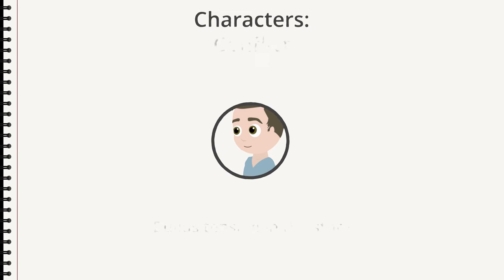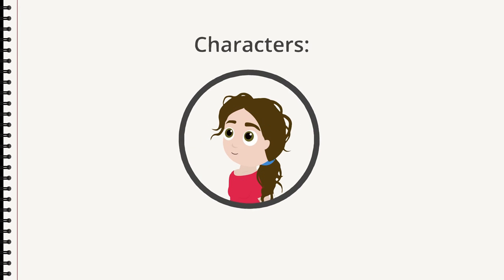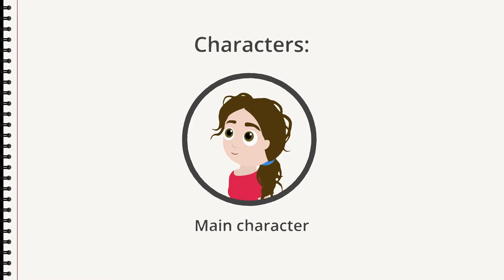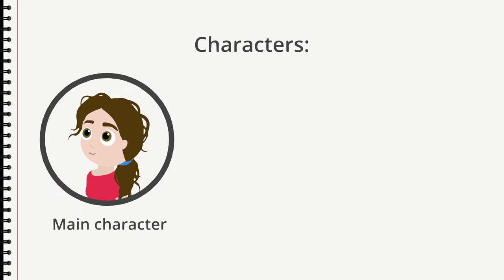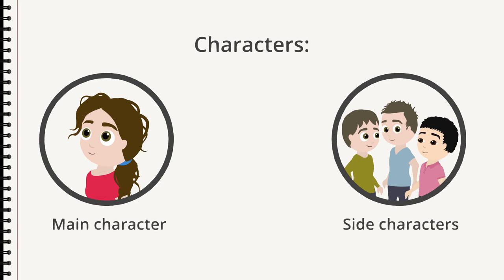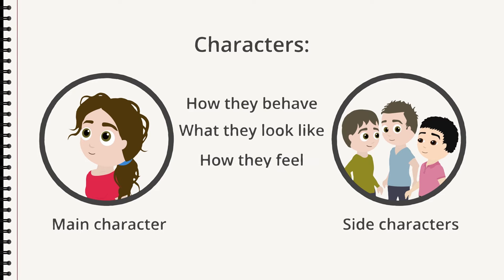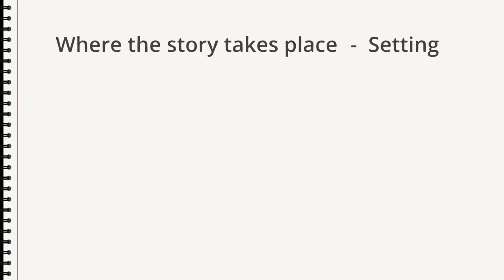Our story is about Nina. She is the main character. To make the main character, or the others in the story — the side characters — come alive, you must decide how they behave, what they look like, and how they feel. Then decide where the story takes place: the settings. As this is a short story, you should use as few settings as possible, perhaps only one.